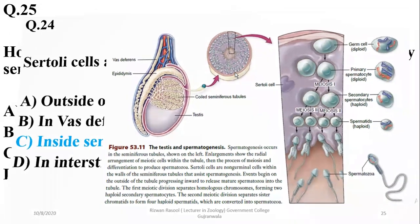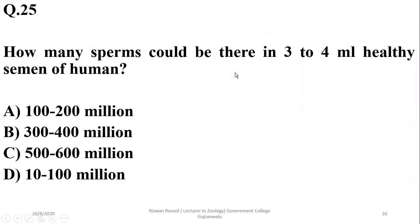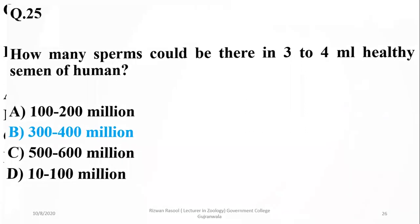Number twenty-five: how many sperms could there be in three to four ml of healthy semen? One ml contains one million, so three to four ml of healthy semen could have 300 to 400 million sperms.